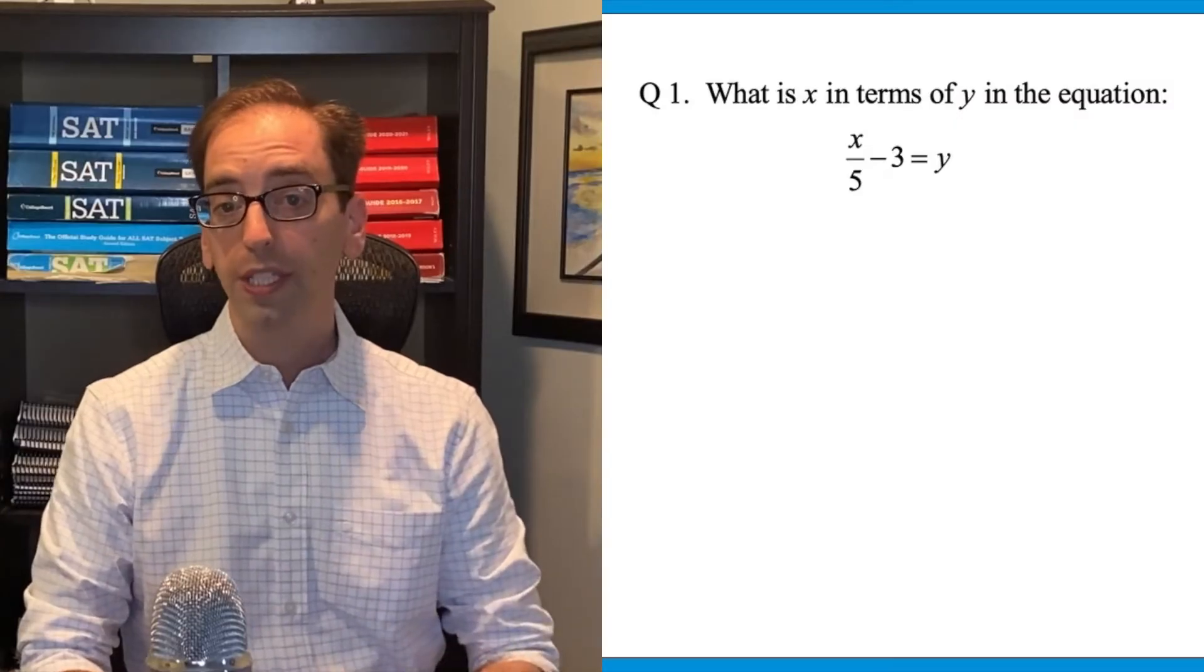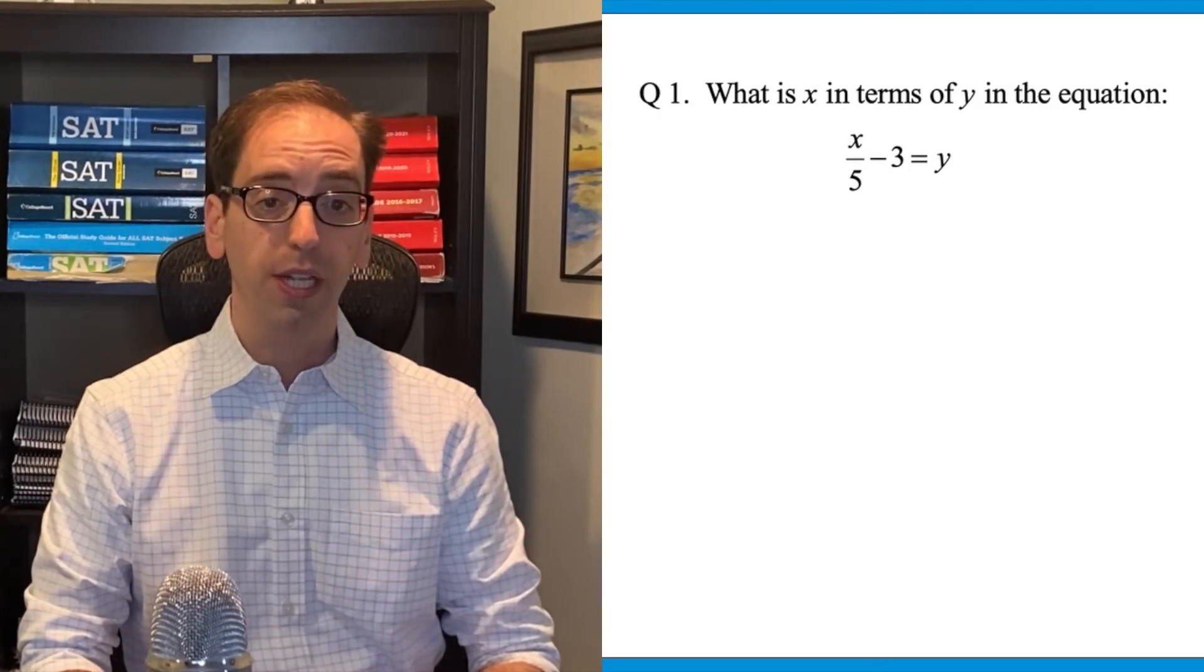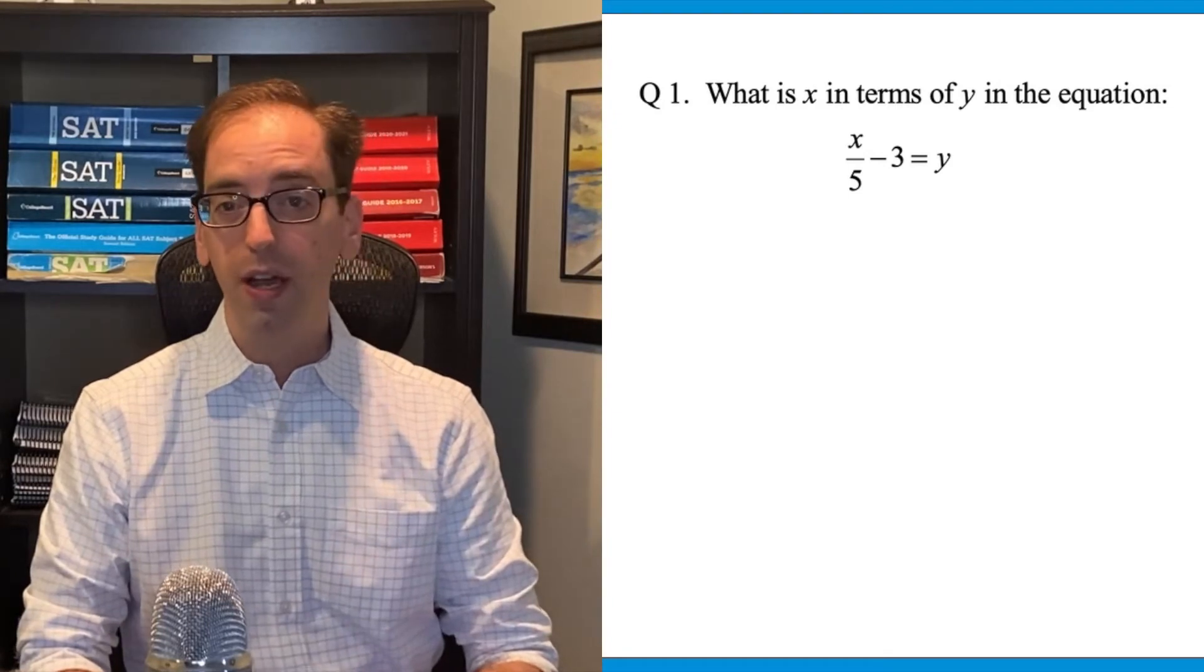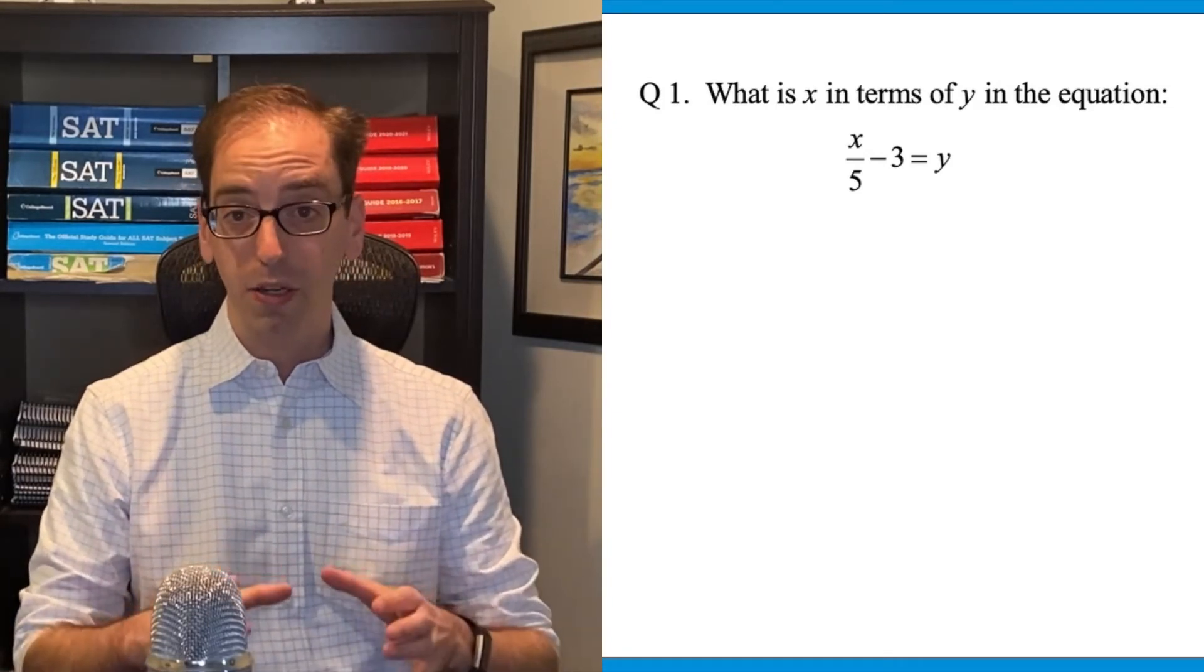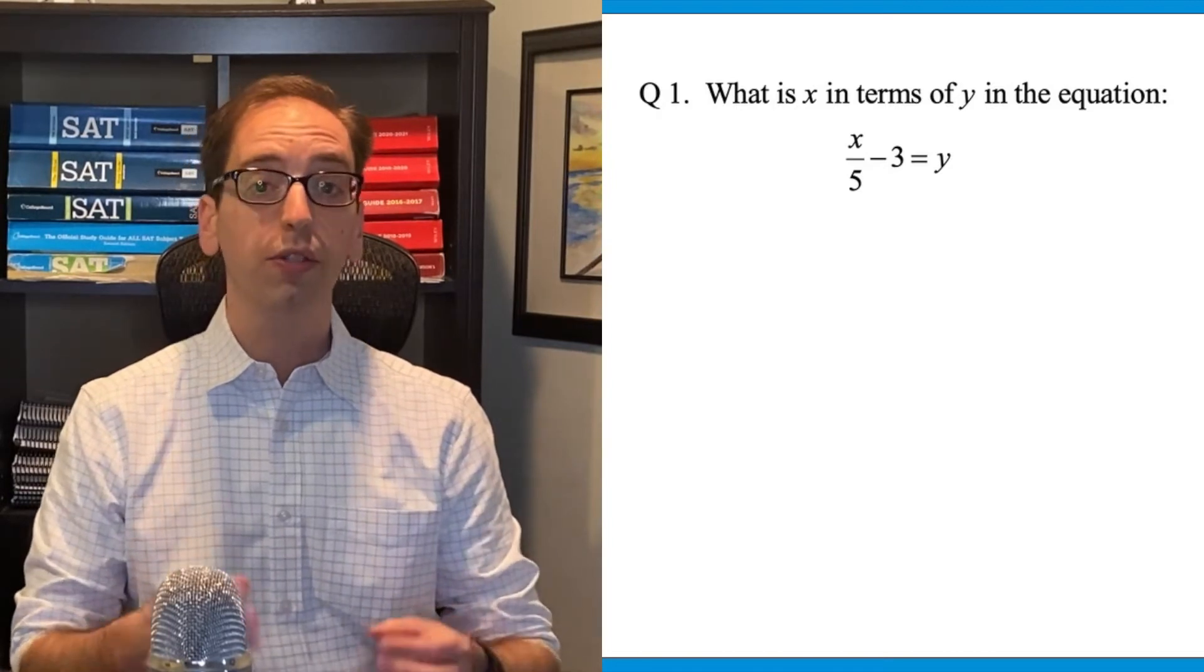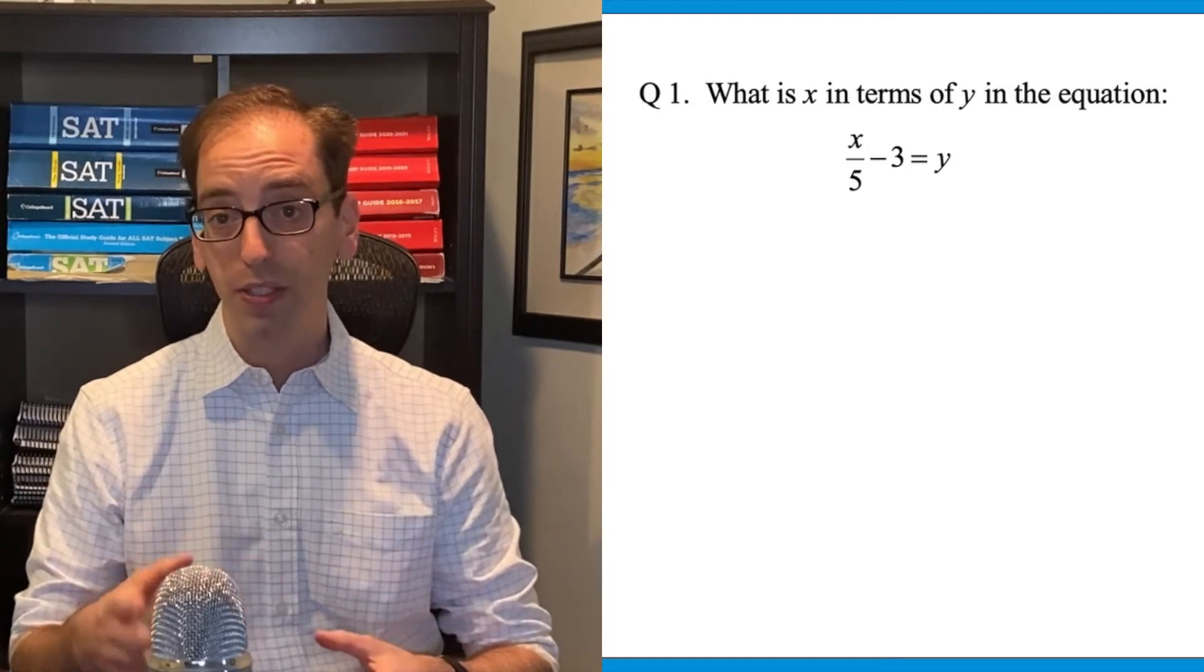Question one. What is x in terms of y in the equation x over 5 minus 3 equals y? When they say in terms of, it's just a very complicated way of saying to get that term alone. So when they say what is x in terms of y, it wants you to isolate x. You need to get everything to the other side to get x all by itself.